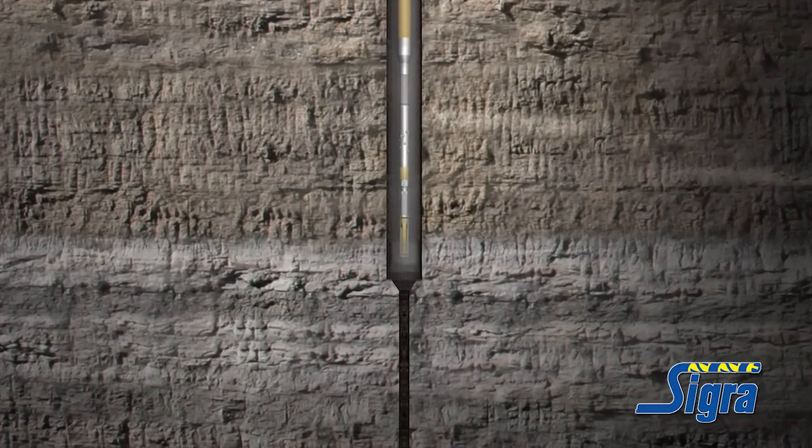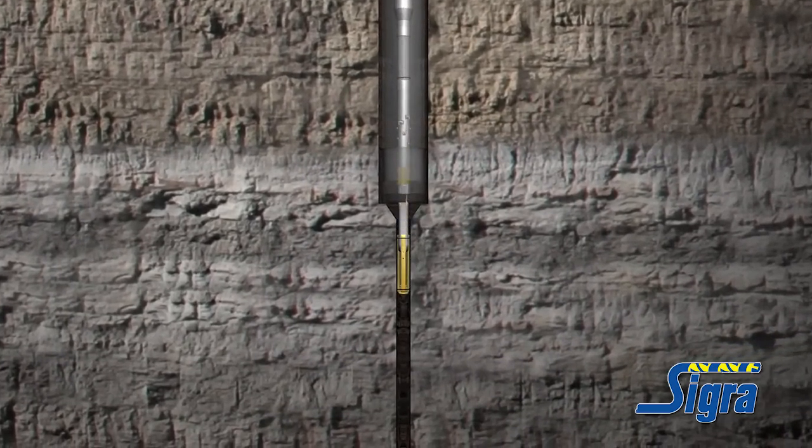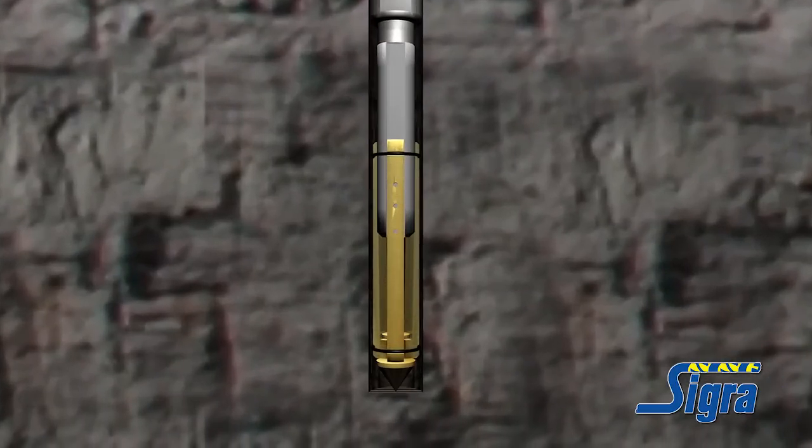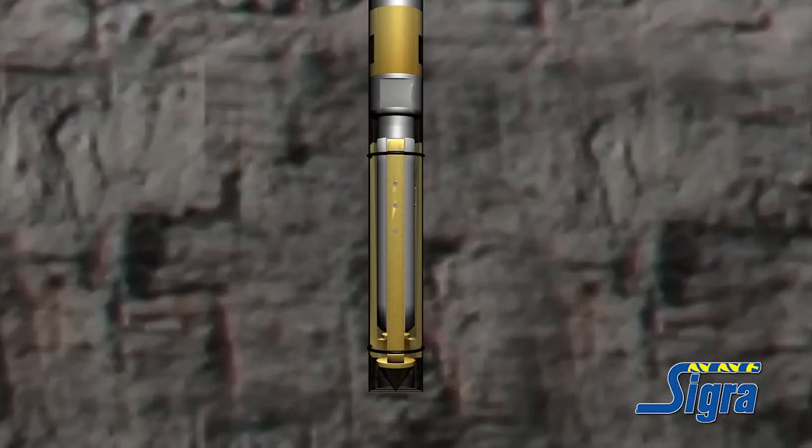The stress tool is then lowered on a wire line suspended setting tool through the drill string and into the pilot hole. The stress tool locks in place in the pilot hole using a mechanical wedge system.